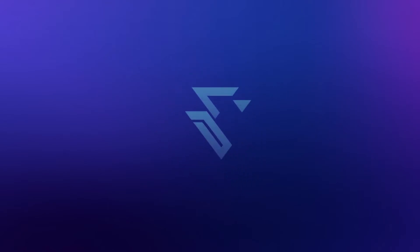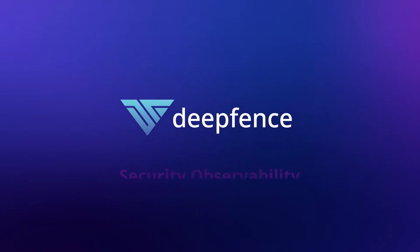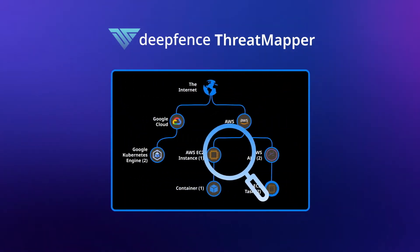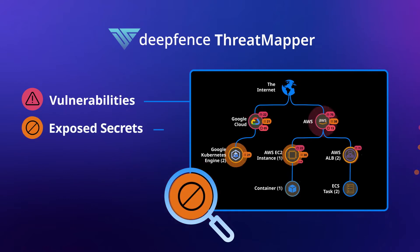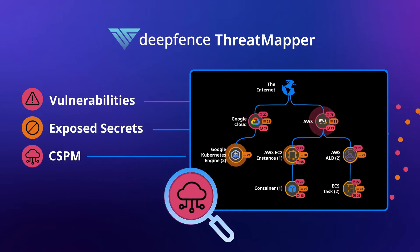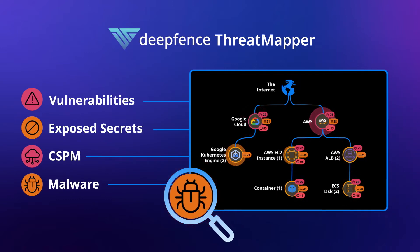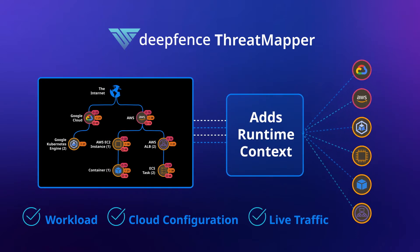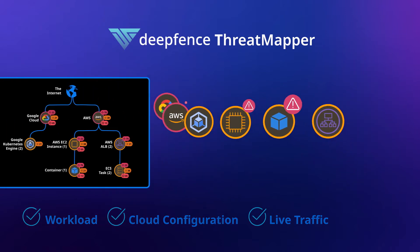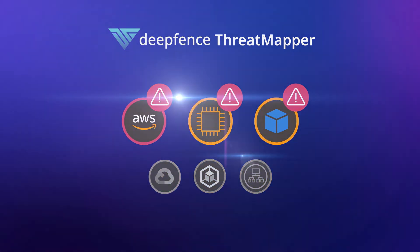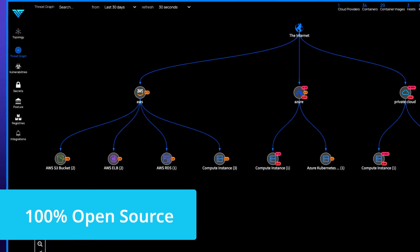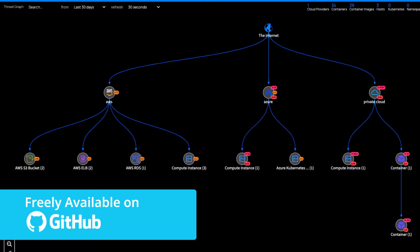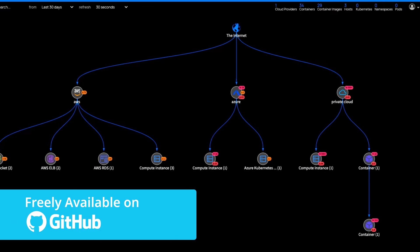The answer? Security observability. DeepFence's Threat Mapper generates an actionable threat graph by scanning your environment for vulnerabilities, exposed secrets, cloud misconfiguration issues, and malware. It adds runtime context about the workload, cloud configuration, and most importantly, live traffic to help organizations prioritize their risk. It does all this in a single open-source platform. Stop paying enterprise prices just to visualize threats lurking within your cloud-native infrastructure.